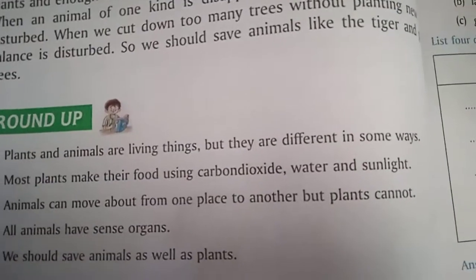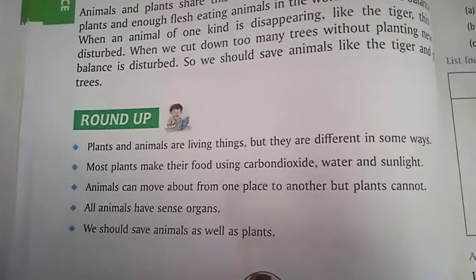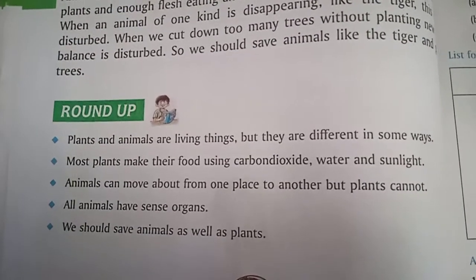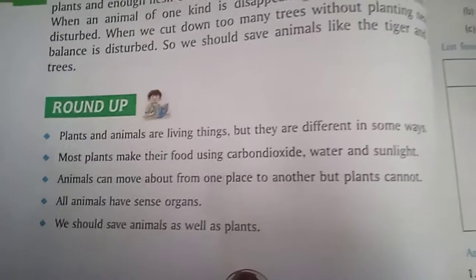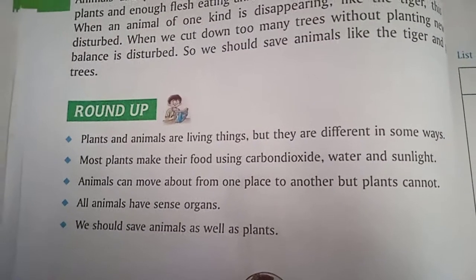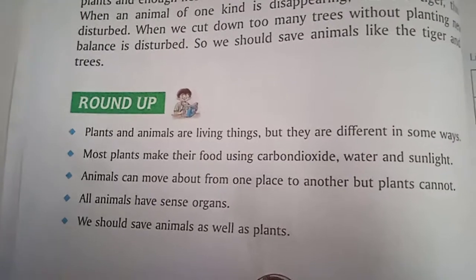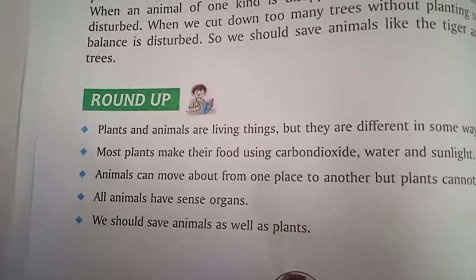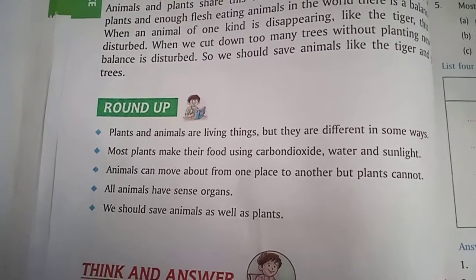Plants and animals are living things, but they are different in some ways. Most plants make their food using carbon dioxide, water, and sunlight. Animals can move from one place to another, but plants cannot. All animals have sense organs. We should save animals as well as plants.